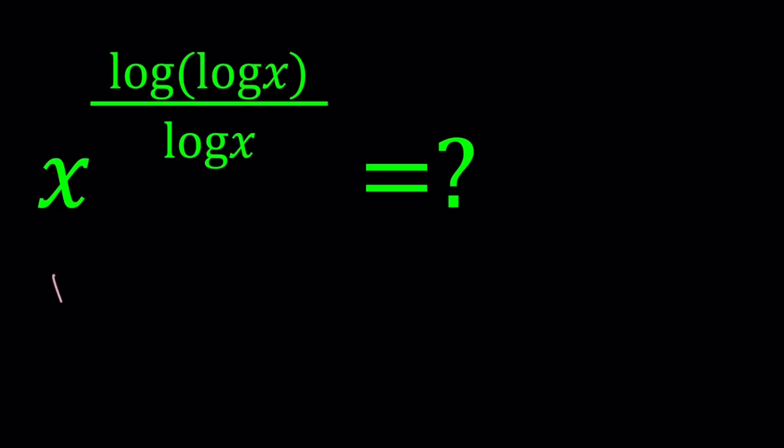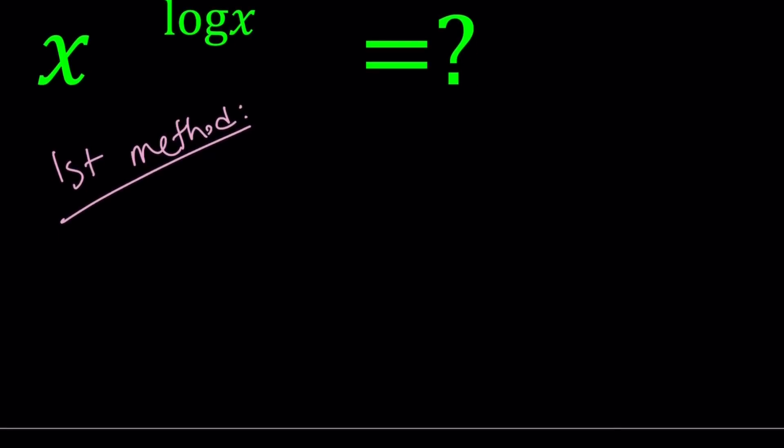And I will be presenting three methods. Let's start with the first method. We're going to write this as x to the power. So our original expression is x to the power log log x divided by log x. Let's start with the original.